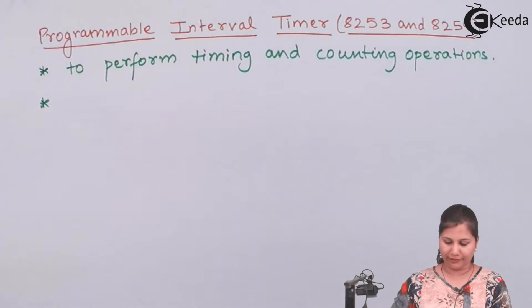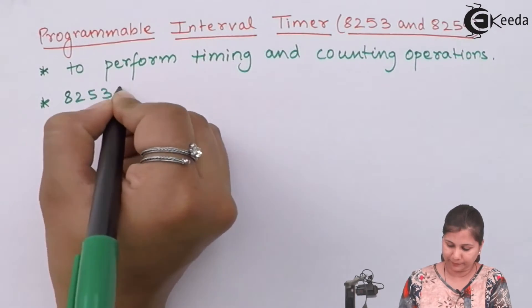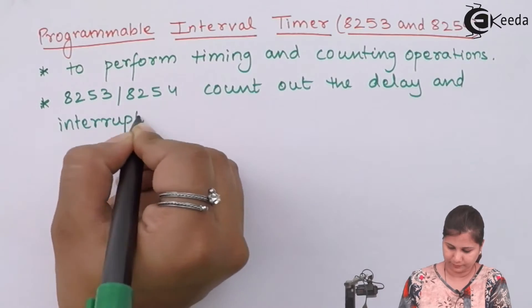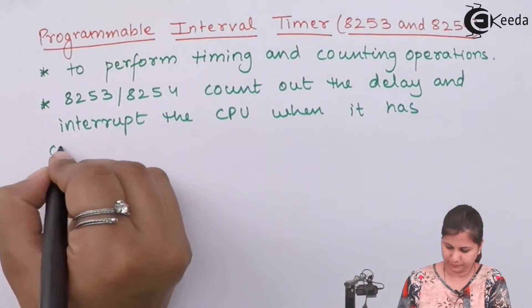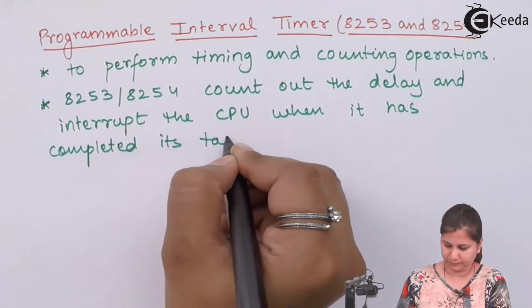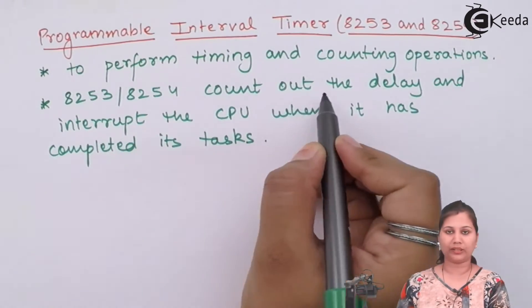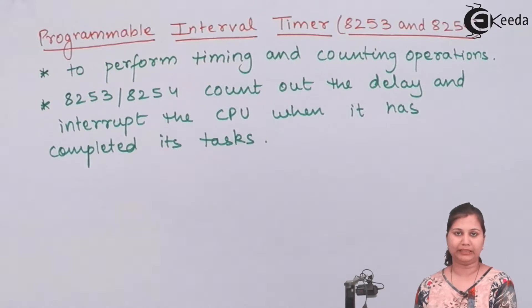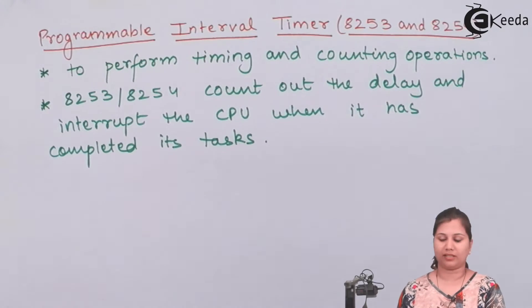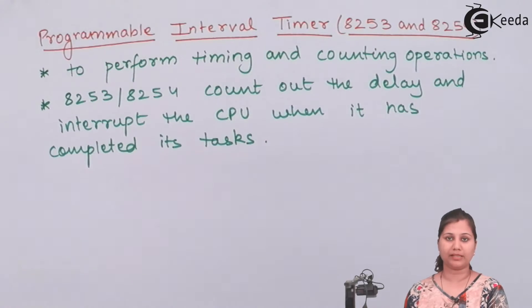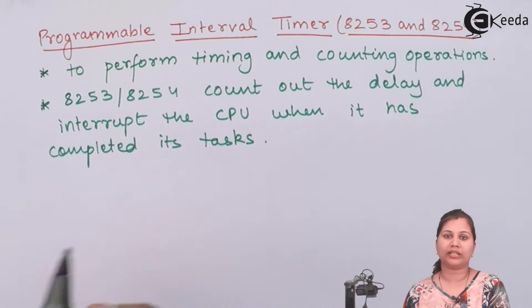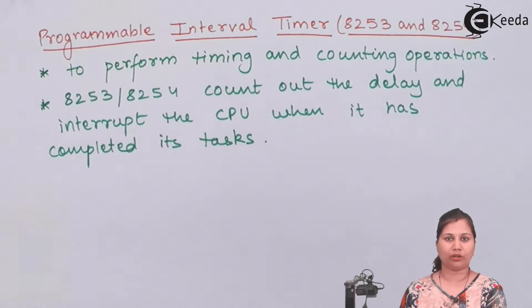The 8253 and 8254 count out the delay and interrupt the central processing unit when their task is completed. Whenever the count has been decremented to 0, these ICs generate a pulse, and that pulse interrupts the microprocessor or the central processing unit. So they can be used to provide time delay and also to interrupt the CPU.